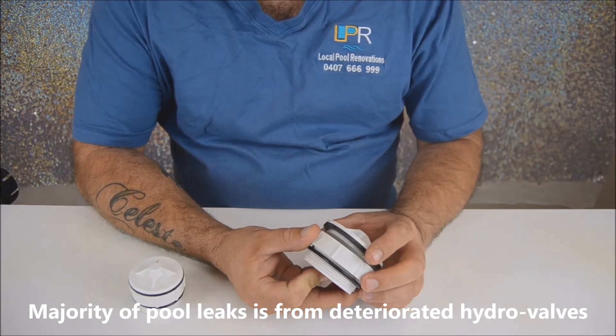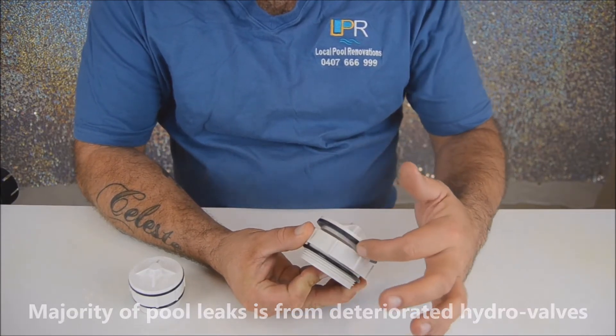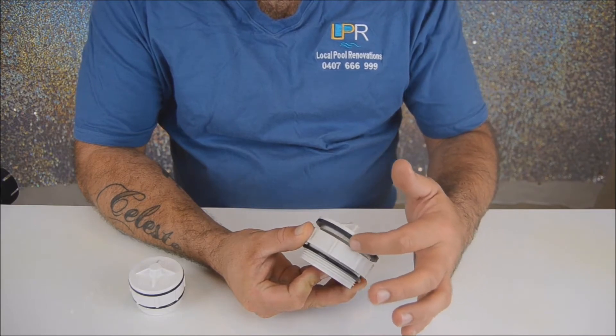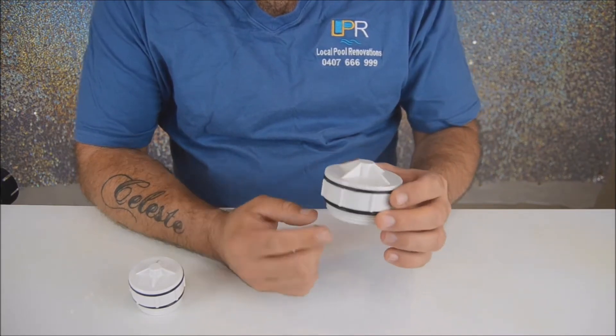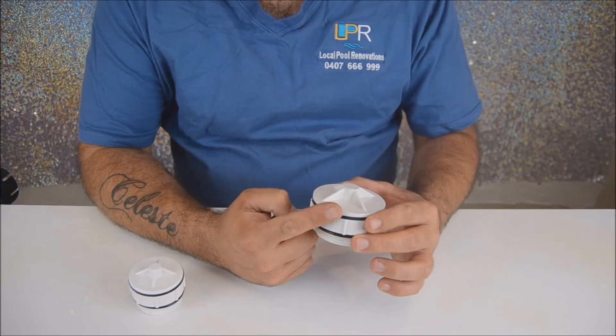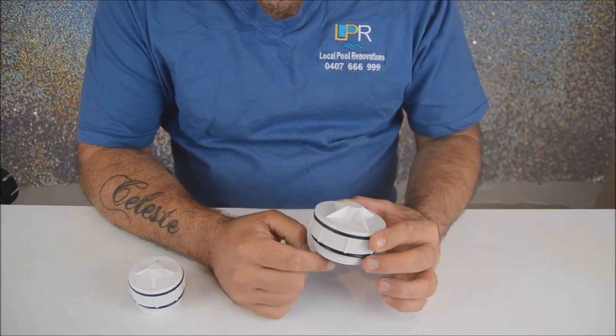Most swimming pool leaks tend to happen from the sill which is in between the hydrostatic valve. That top sill tends to deteriorate, which means that the water is able to flow from the pressure inside the swimming pool out into the ground.